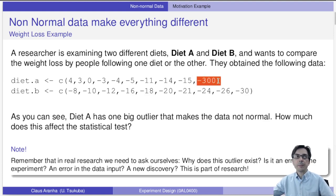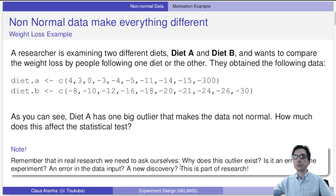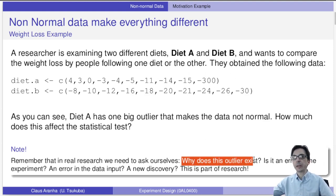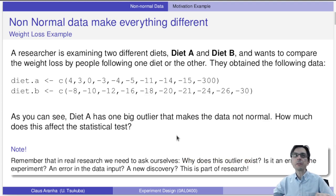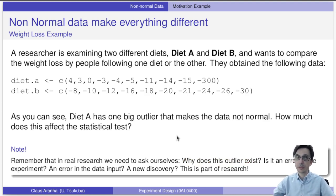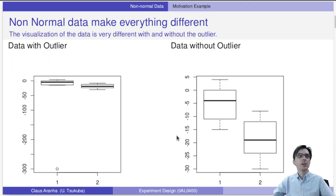When we have a huge outlier like this, we have to ask: why does this outlier exist? Is it an error in data input, or is it a new discovery? Right now in this video, let's focus on how we treat this from a statistical point of view. With the outlier included, the two samples get really close to each other.